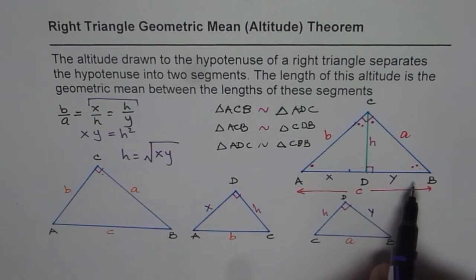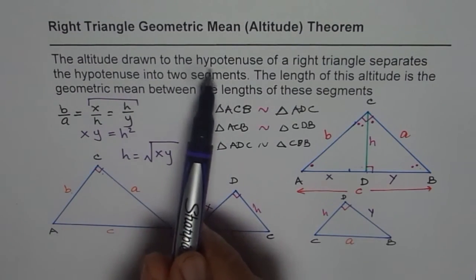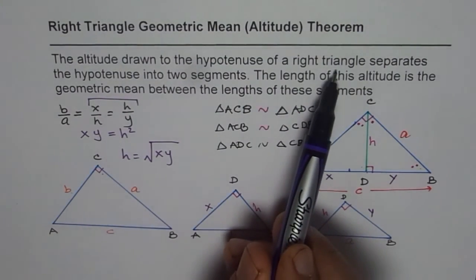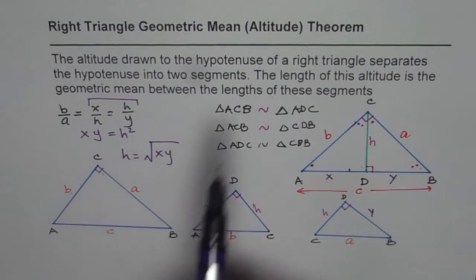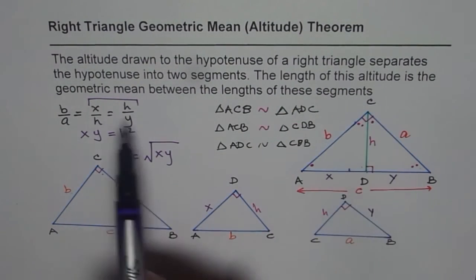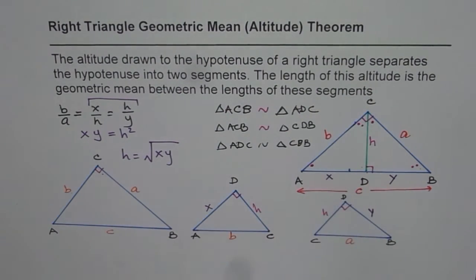So let me now state the theorem once again. It is: the altitude drawn to the hypotenuse of a right triangle separates the hypotenuse into two segments. The length of this altitude is the geometric mean between the lengths of these segments. So that is how you prove it.